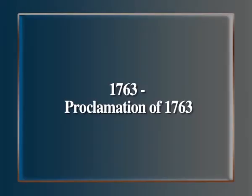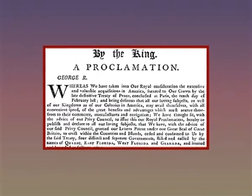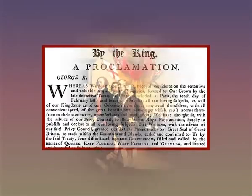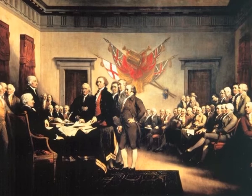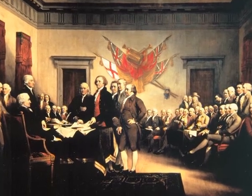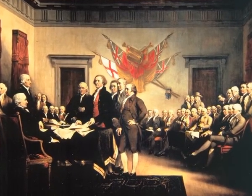1763: The Proclamation of 1763 was passed, which prohibited settlements of whites beyond the Appalachian Mountains. While Britain did not intend to harm the colonies, many colonies took offence at the order.